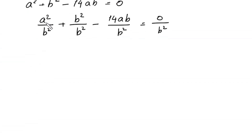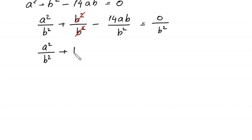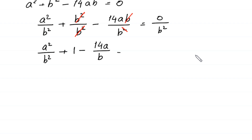This a squared over b squared remains the same. This b squared cancels with this b squared, leaving plus one. The b squared in the denominator cancels with the b in 14ab, leaving minus 14 times a divided by b, equals zero.